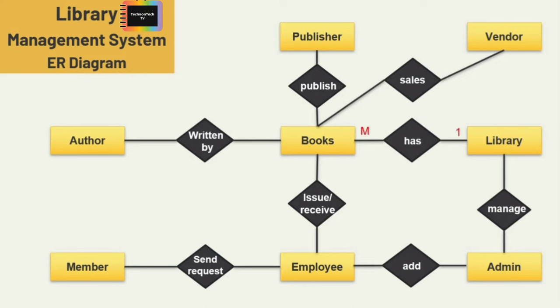One library has many books, and one admin manages only one library at a time. Admin also adds different employees, so one admin adds many employees, and different members send many requests to different employees. Next is the employee and books relation: one employee issues and receives many books at one time.